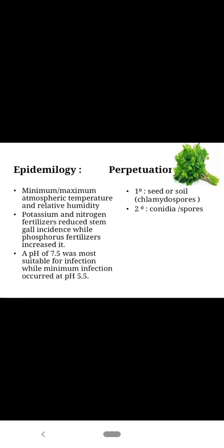Favorable condition — epidemiology: minimum or maximum temperature and relative humidity are the main factors. Phosphorus fertilizers increase the incidence. pH also plays a very important role; 7.5 pH is suitable for infection. Perpetuation — mode of survival: primary infection occurs through seed or soil with the help of chlamydospores, and secondary infection occurs through conidia or spores.